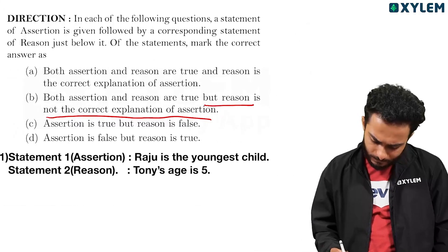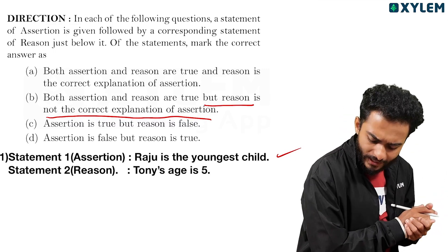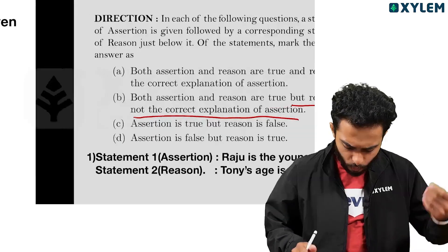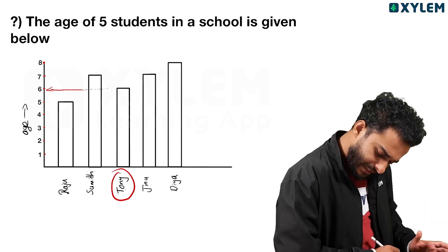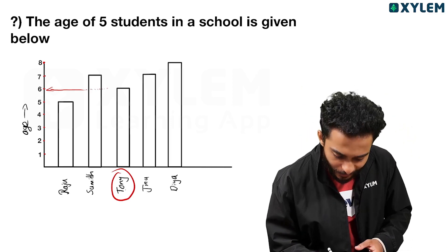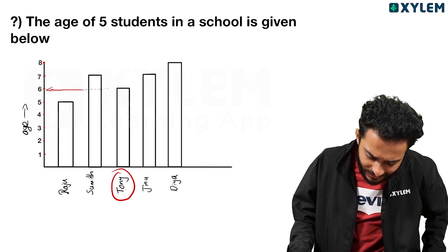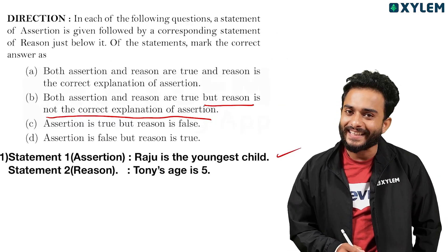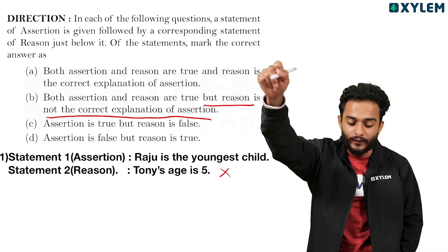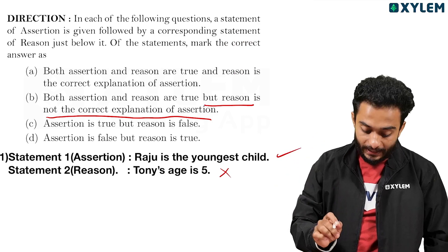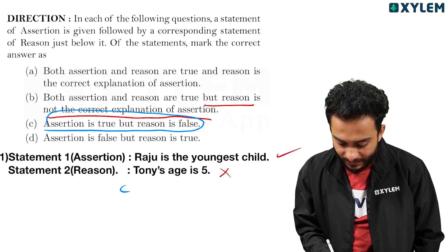Statement 2 — Reason: Tony's age is 5. But from the bar graph, Tony's age is actually 6, not 5. So statement 2 is false. Since the assertion is true but the reason is false, the answer is Option C.